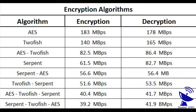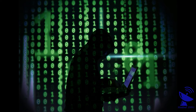As you can see in the figure, there are some examples of encryption algorithms. The speed of encryption and decryption of data is given in Mbps. You need to choose the appropriate algorithm for your needs. If you want faster encryption speed, you should go with the AES algorithm, which encrypts data at 183 Mbps and decrypts it at 178 Mbps.